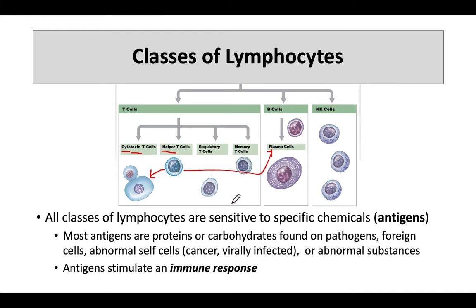Regulatory T's actually help regulate the immune response so it doesn't get out of control. And memory T's help us essentially build up an immunity to pathogens that we've already seen.